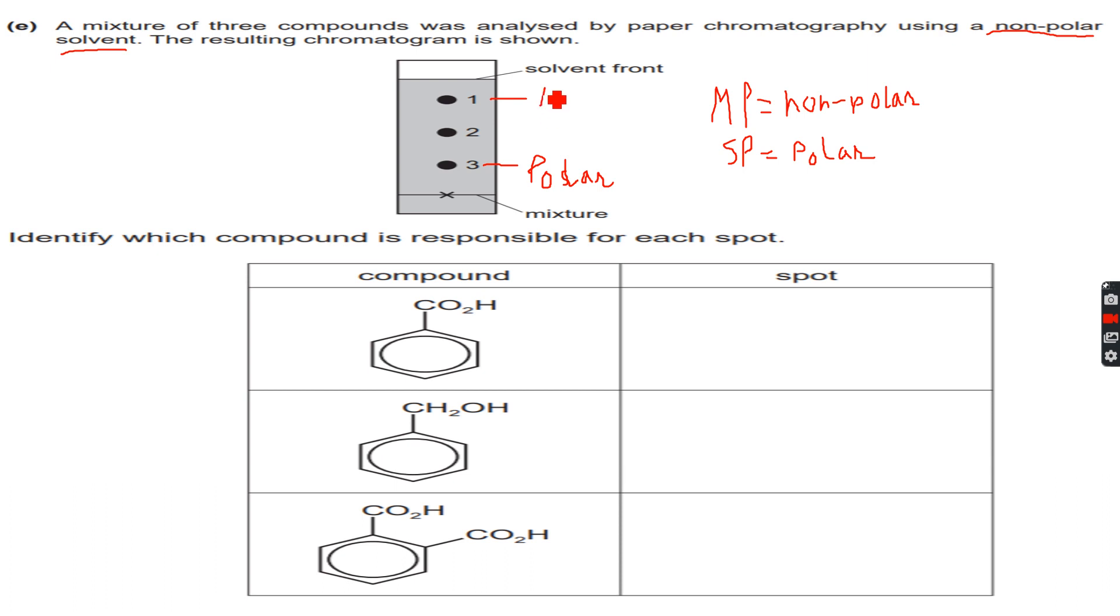One will be the most non-polar because it has traveled the furthest in the mobile phase - it has dissolved the most in the mobile phase, so it is the most non-polar because like dissolves like. Now we have benzoic acid, the benzene ring attached to CH2OH, and a benzene ring attached to two carboxylic acid groups.